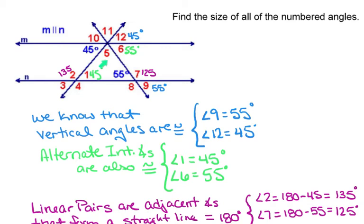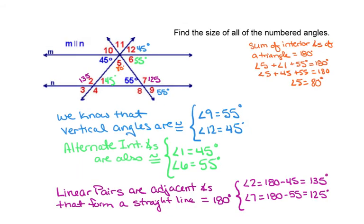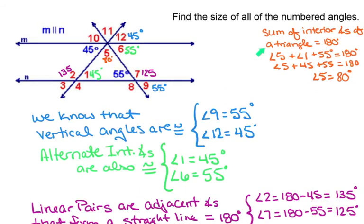Another one that's going to be quick to find is angle 5. So angle 5 with angle 1 and 55 form a triangle. They're the interior angles of the triangle. The sum of the interior angles of the triangle are 180 degrees. So if I add up angle 5 plus 45 plus 55, it has to equal 180. So 45 plus 55 is 100. 180 minus 100 gives me 80 degrees.